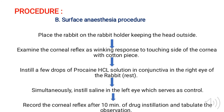Then coming to the next method — surface anesthesia procedure. Place the rabbit on the rabbit holder keeping the head outside. Examine the corneal reflex as a winking response to touching the side of the cornea with a cotton piece. After that, instill a few drops of procaine hydrochloride solution in the conjunctiva of the right eye of the rabbit. Simultaneously instill saline in the left eye which serves as the control. Record the corneal reflex after 10 minutes of the drug instillation and tabulate the observations.